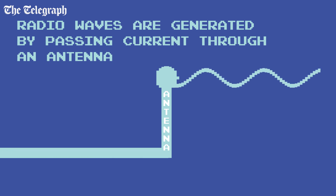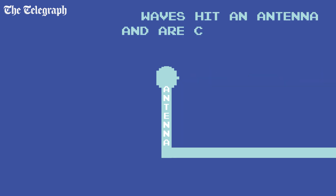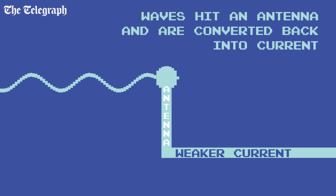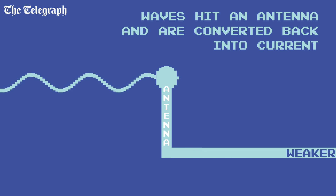This generates an electromagnetic wave which is emitted from the antenna. If that wave hits a similar antenna, it will excite the electrons there in the same pattern and generate a similar but weaker electric current. You've just transmitted and received a radio signal.